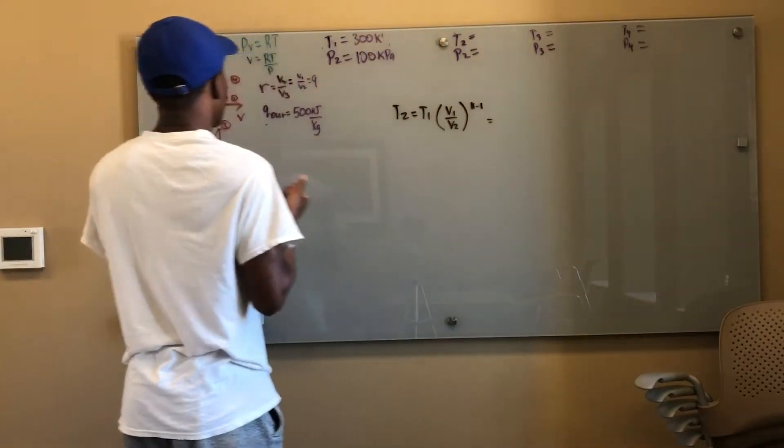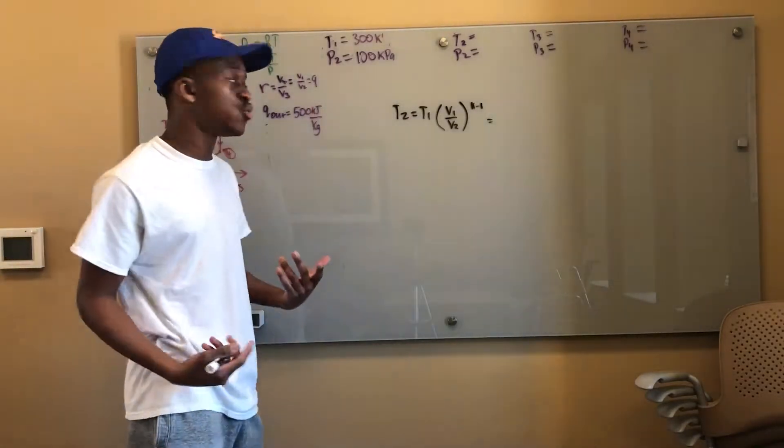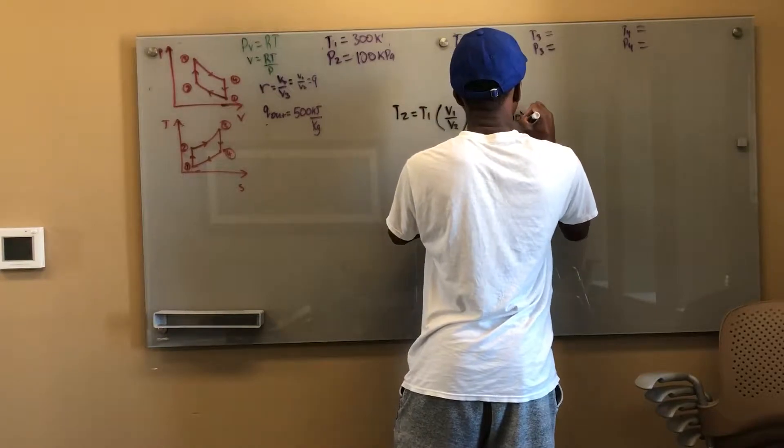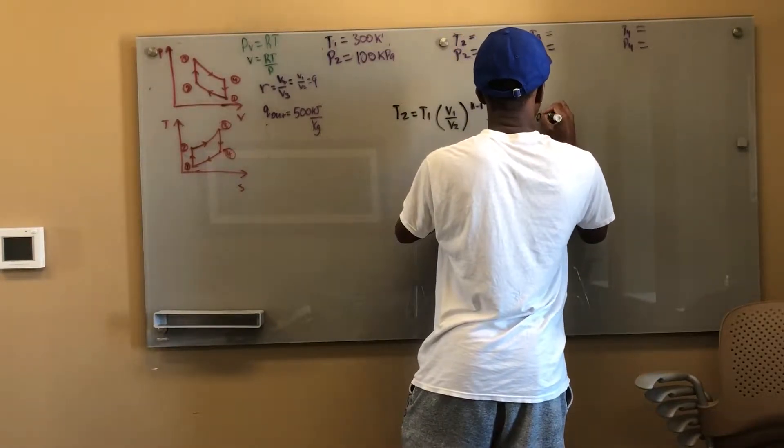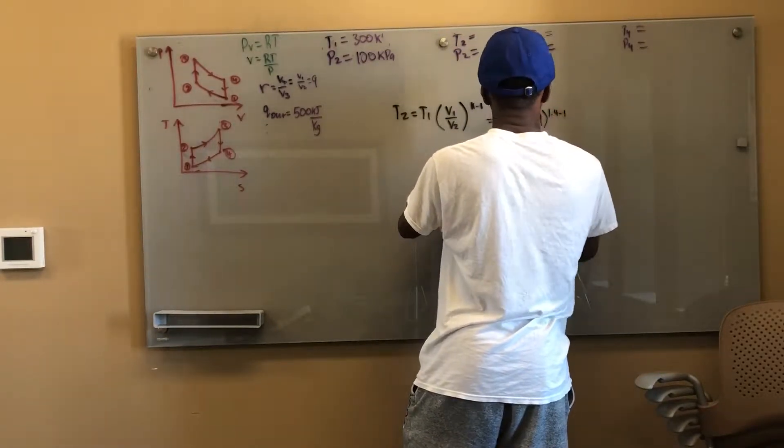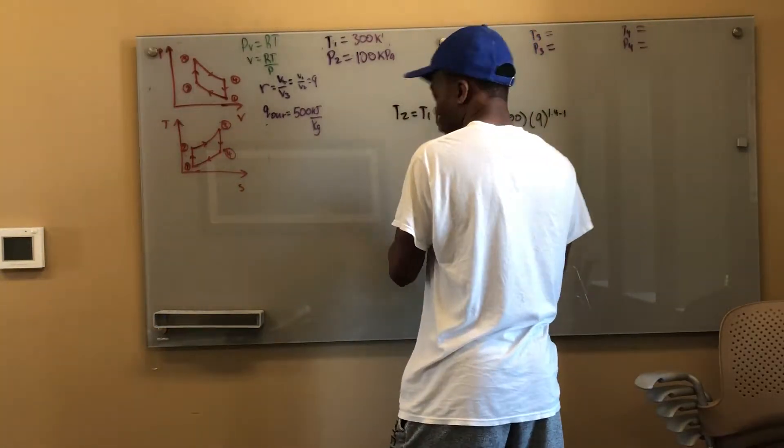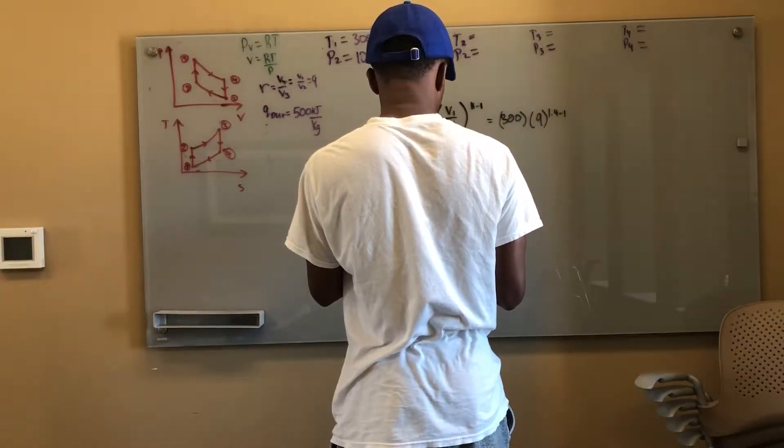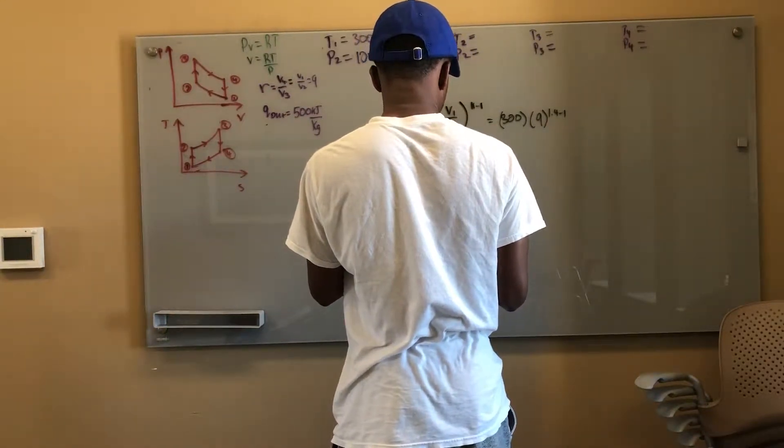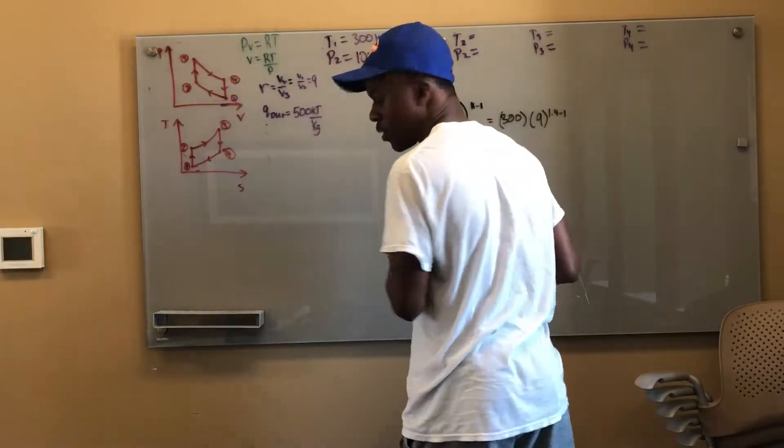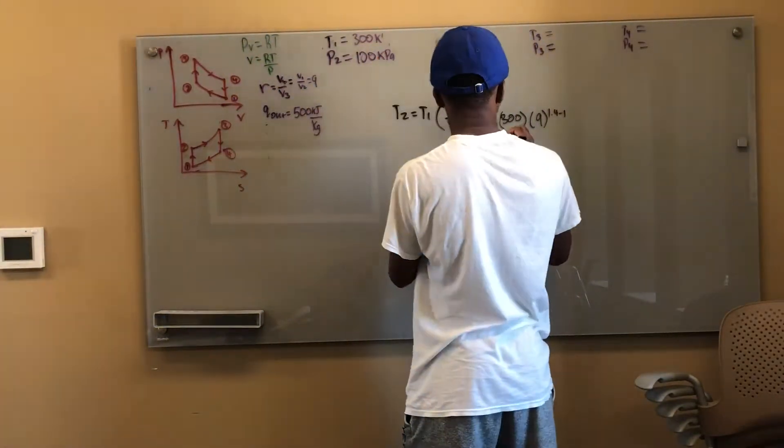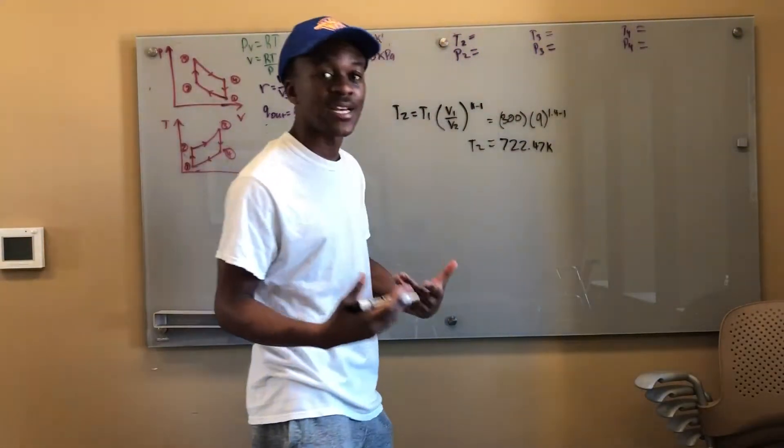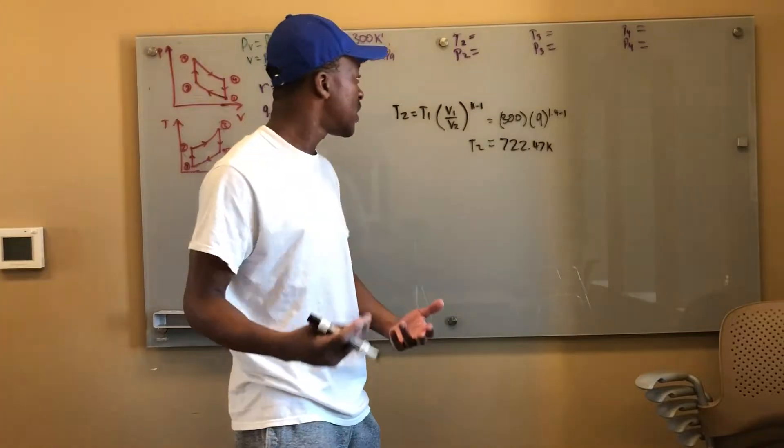Now something I want to point out, the compression ratio being 9 is just V1 over V2. So this is just 9. So T2 is actually equal to 300 times 9 to the 1.4 minus 1 and that gives me that T2 is equal to 722.47 Kelvin. And I got this 1.4, it's just the k for air that can be gotten from the book.